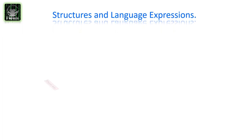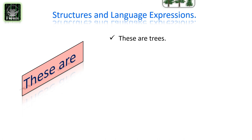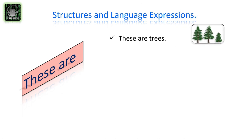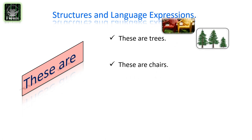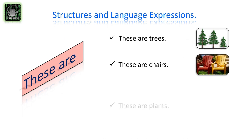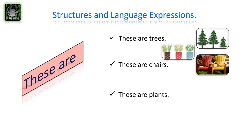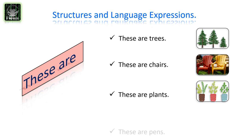Now let's look at more examples using 'these are': These are trees. These are shells. These are plants. These are pens.